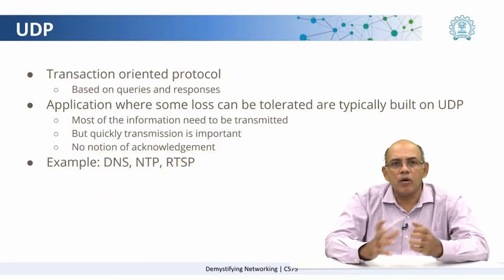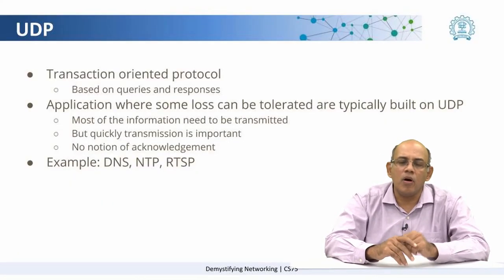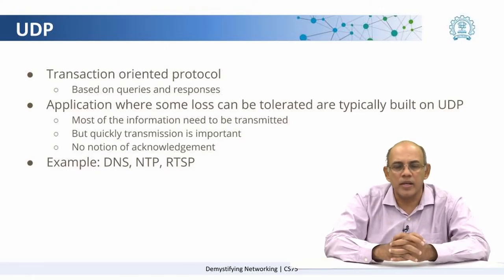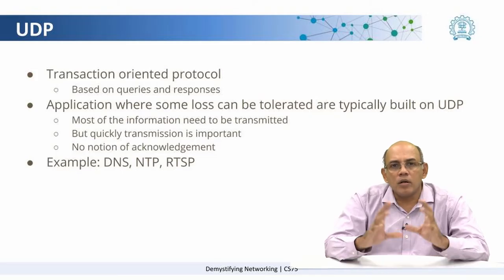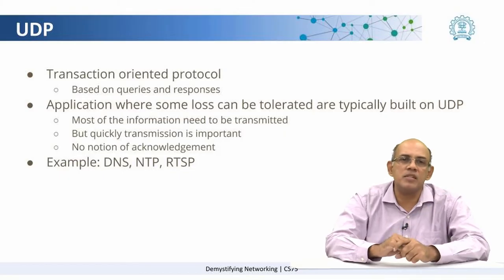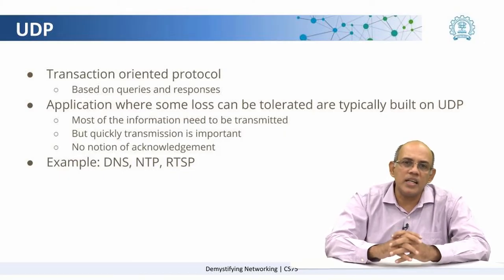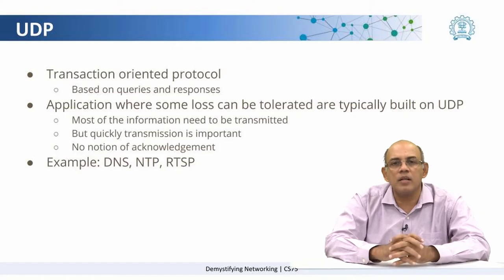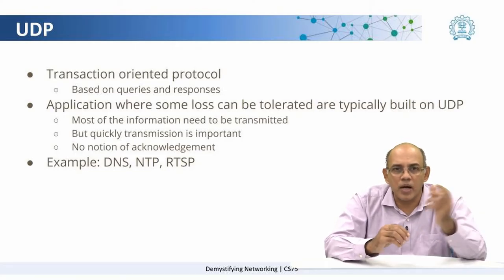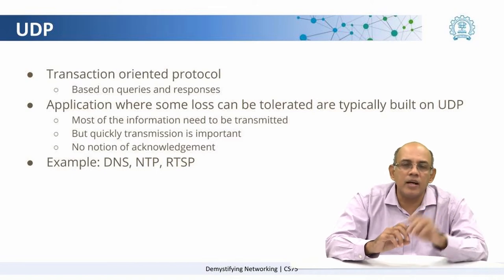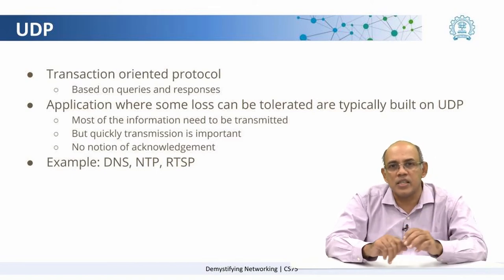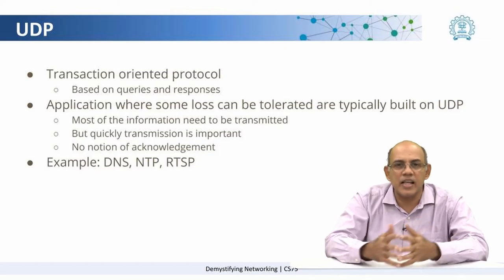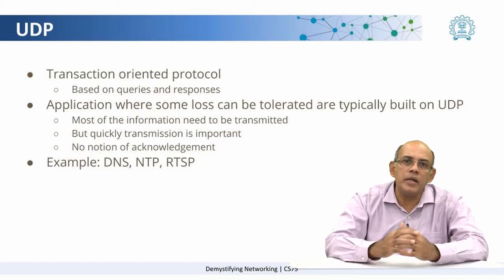Now, we come to UDP, which is a far simpler protocol than TCP. UDP is basically called a transaction-oriented protocol — it is for simple queries and responses. It is suitable for applications which can tolerate some loss. For example, if you are watching a video and certain parts of the video are not very easy to see occasionally, applications like that are often built on top of UDP.